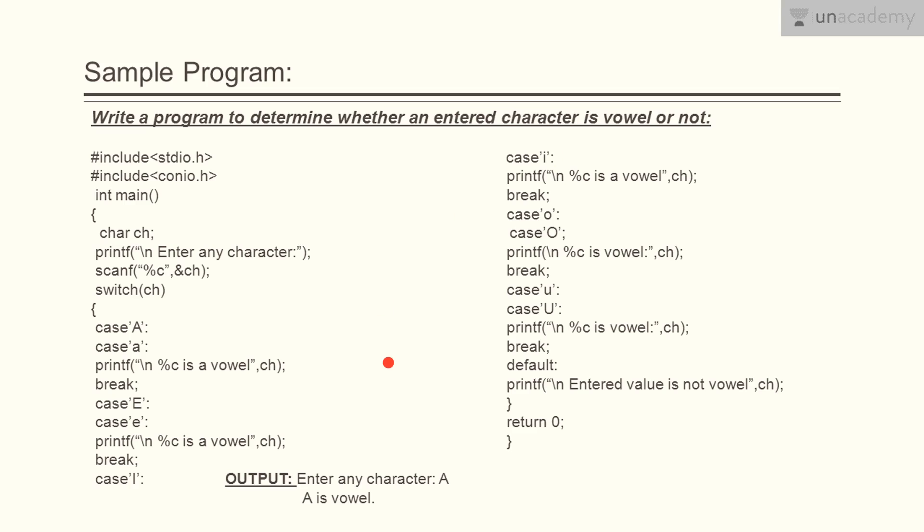Printf if case a, if you enter capital A or small a, since this is character type we have given a single inverted comma. So printf percent c is a vowel percent c. Why? Because this is character and this indicates that ch means ch is a name of character data type.